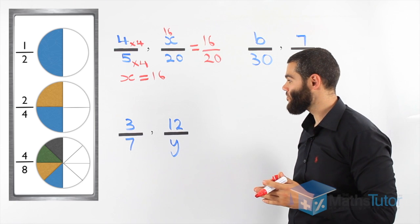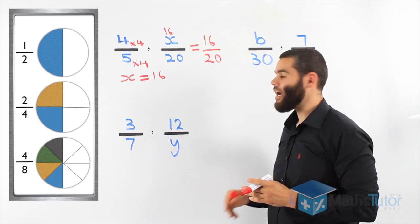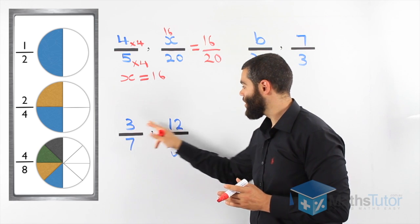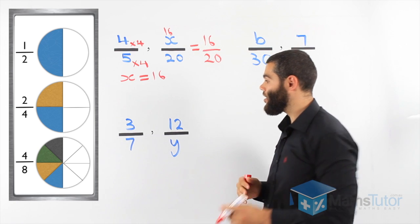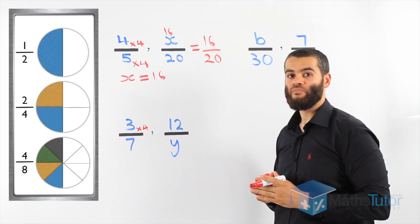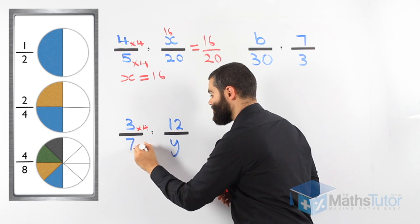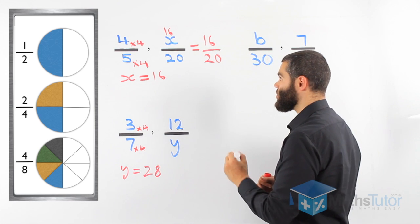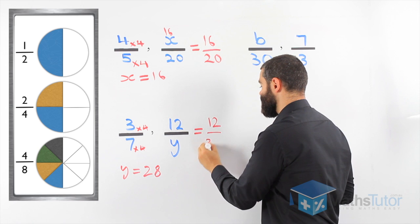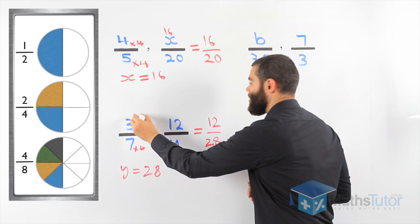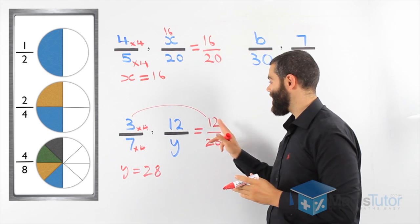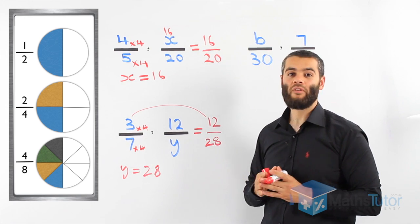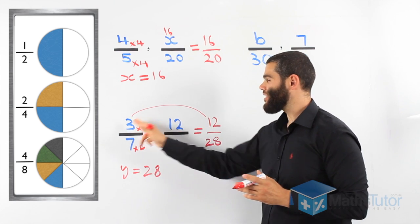Looking at this example: 3 over 7 and 12 over y are equivalent. We need to know what y is. We ask ourselves, how do we get from 3 to 12? 3 times 4 is 12. That means 7 times 4 is 28, so y is 28, which means it's 12 over 28. So 3 over 7 and 12 over 28 are equivalent fractions — just like 1/2 and 2/4 are equivalent. Same value, but written differently.